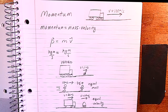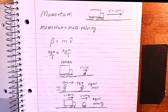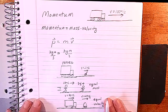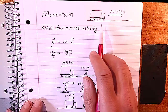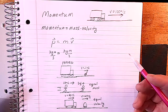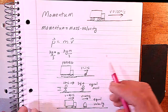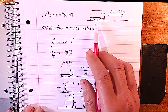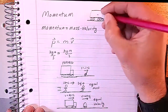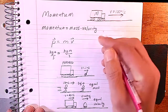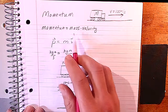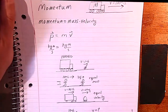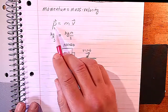Momentum is one of those concepts in physics that actually agrees with your common experience. For example, something that has a lot of momentum would be something like a truck driving really fast down the road. The two parts that make up its momentum are mass and velocity — a truck going very fast has a lot of both. So momentum is nothing more than mass times velocity.